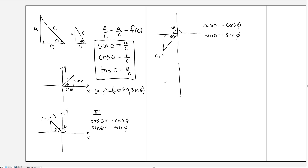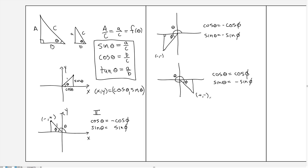Finally, in the fourth quadrant, when the angle wraps around into that region, we again define the triangle by dropping a line to the horizontal, calling this angle phi. The horizontal component of the point is positive and the vertical component is negative. So the cosine of theta is defined as the cosine of phi, and the sine of theta is taken as the sine of phi with a minus sign in front. That is how we define cosine and sine for any angle between 0 and 2 pi.